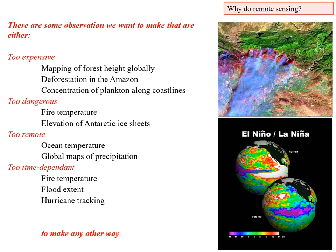Why do we do remote sensing? There are some observations we want to make that are either too expensive, too dangerous, too remote, or too time dependent to make any other way. For example, a map of forest height globally could be done in the field, but sending people out everywhere would be too expensive to be practical. Deforestation in the Amazon — again, sending people out just isn't practicable.